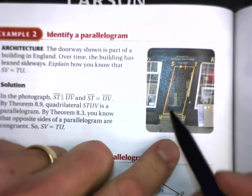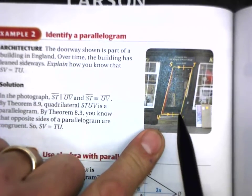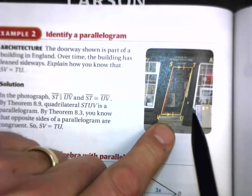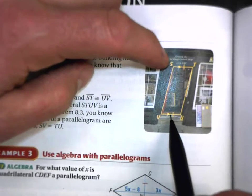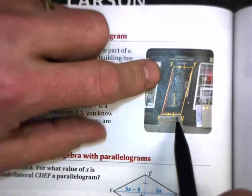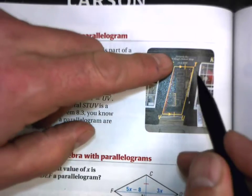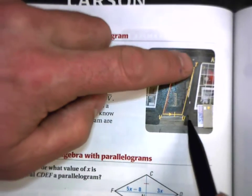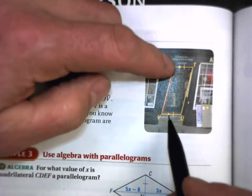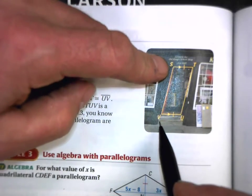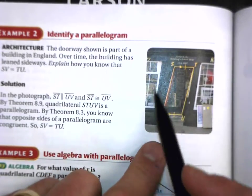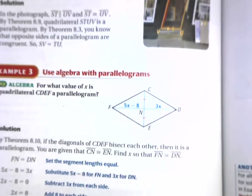Here they're telling us this is an old doorway of a building in England. Over time, this thing has shifted over to the side. But they're telling us that these two opposite sides of the doorway — the threshold and the top — are parallel to each other and also the same length, therefore congruent. And that's all that we need to know that this is a parallelogram. I do not have to measure these other sides, the angles, or anything else — just knowing those two sides are parallel and congruent is sufficient to prove that this entire quadrilateral is a parallelogram.